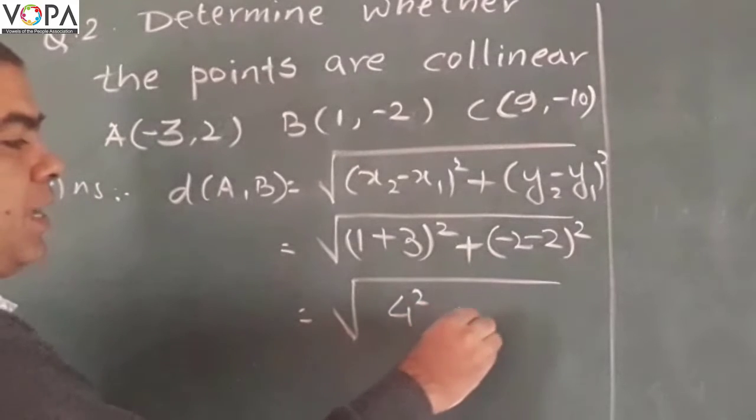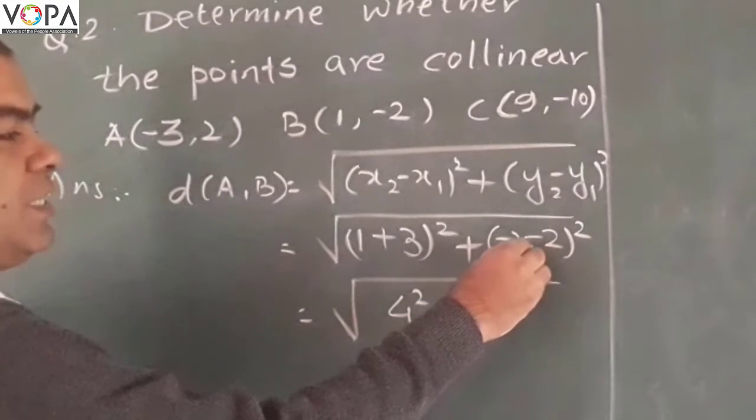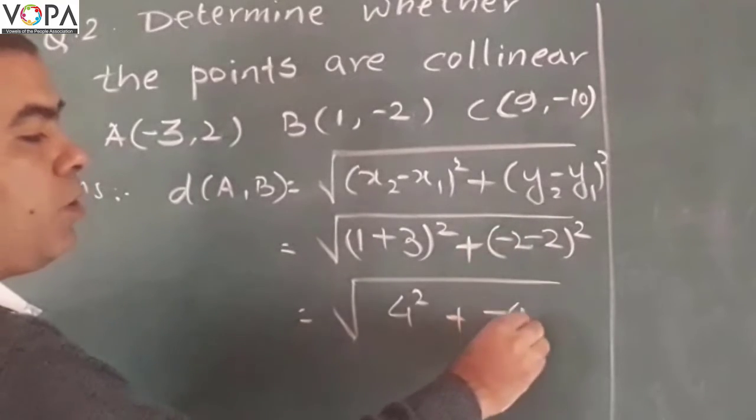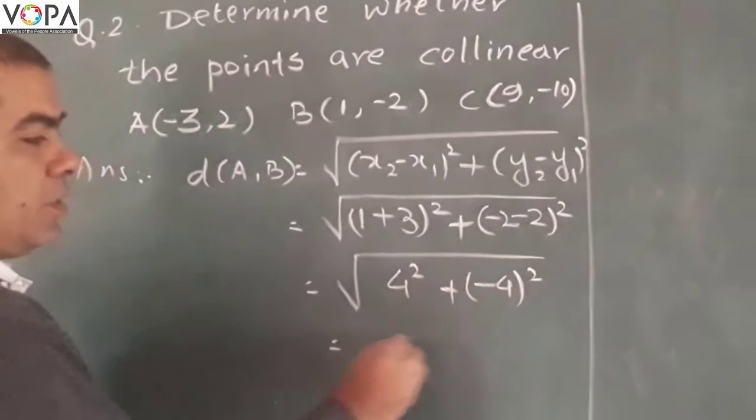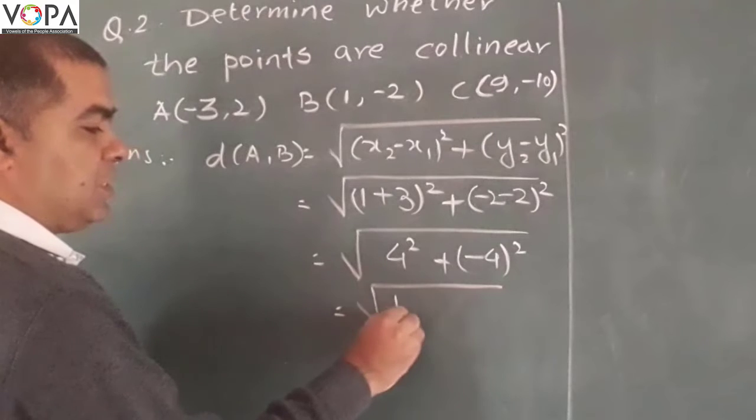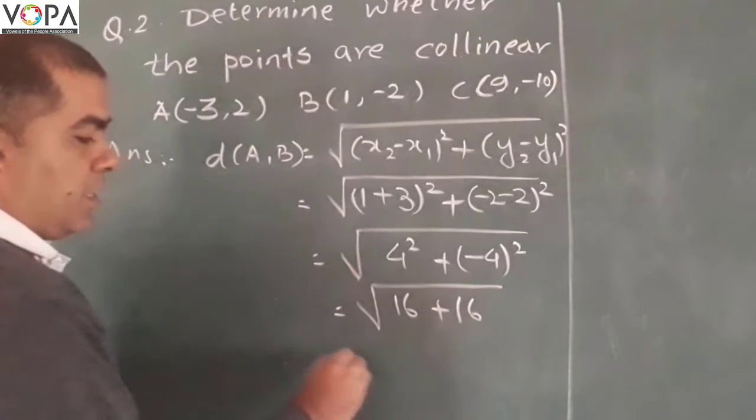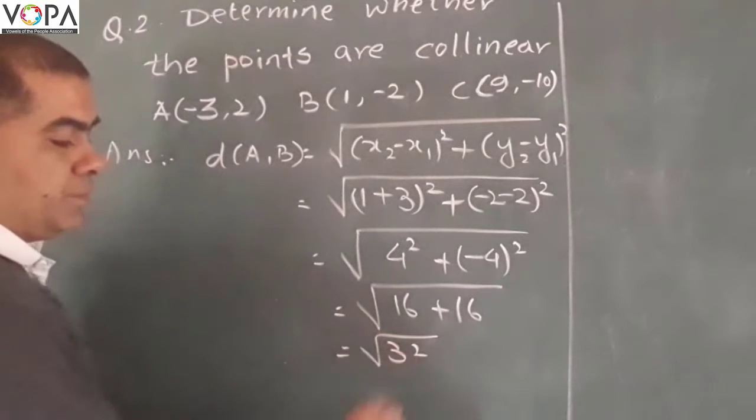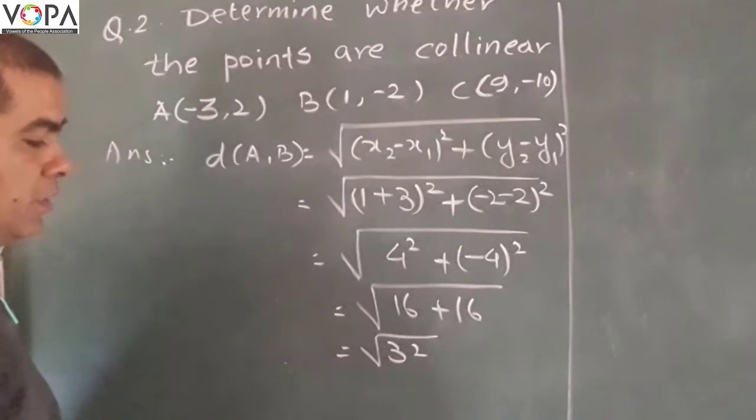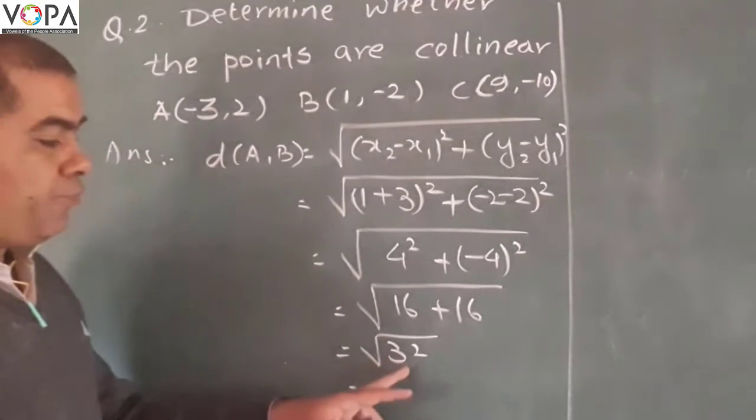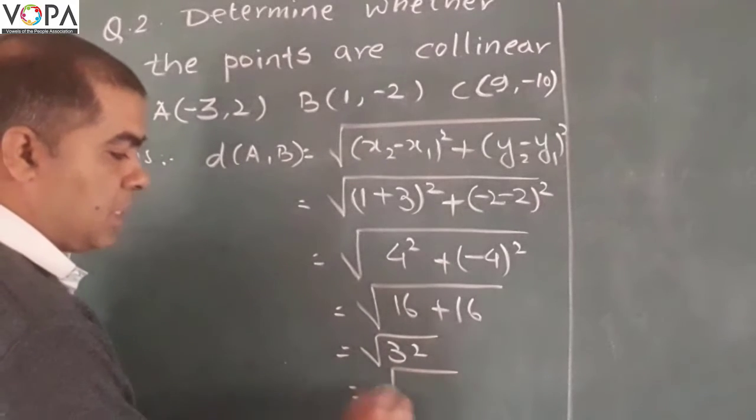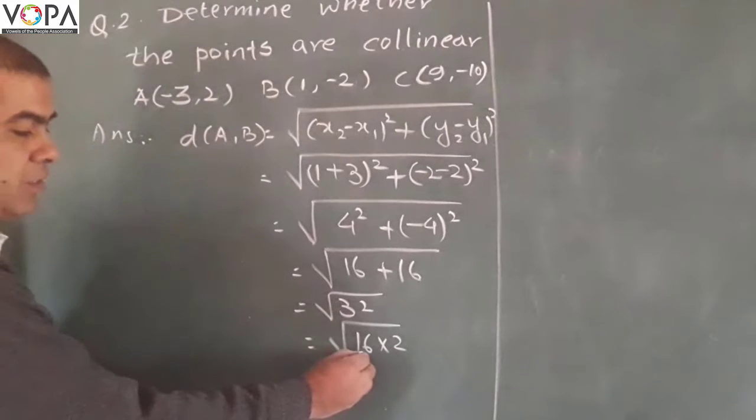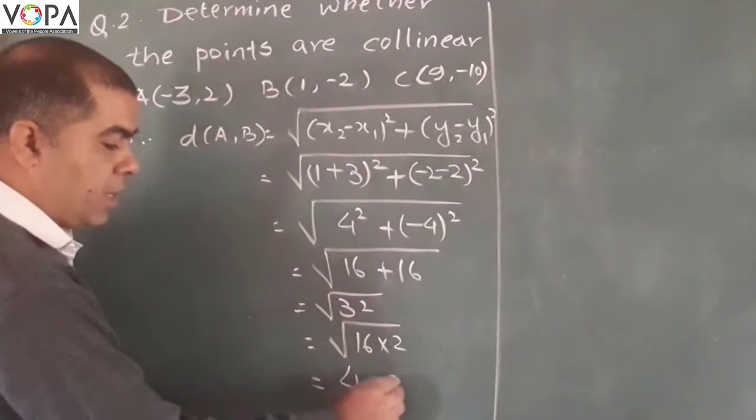It will get 16 plus 16, and its answer will be root 32. Now factorize this: 16 multiplied by 2, and the answer will be square root of 16 is 4, and root 2. This is the distance AB.